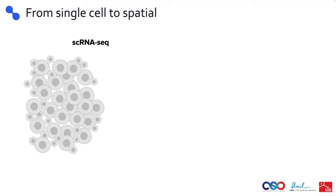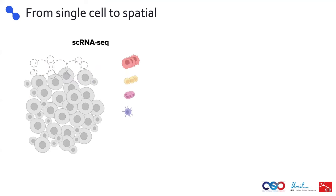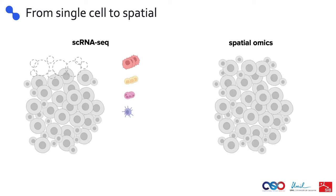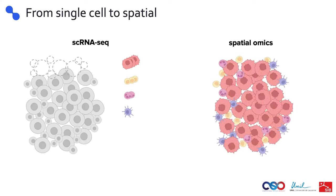Tissue architecture is being intensely studied using techniques like single cell technology, where every individual cell in a sample is separated and then sequenced. However, this process makes us lose the information about the original location of the cells in the tissue. In the last years, spatial omics techniques have emerged as a new tool to study tissue architecture because they allow to capture the molecular information — RNA for spatial transcriptomics and proteins for spatial proteomics — while maintaining knowledge on how the cells were arranged spatially in the tissue.